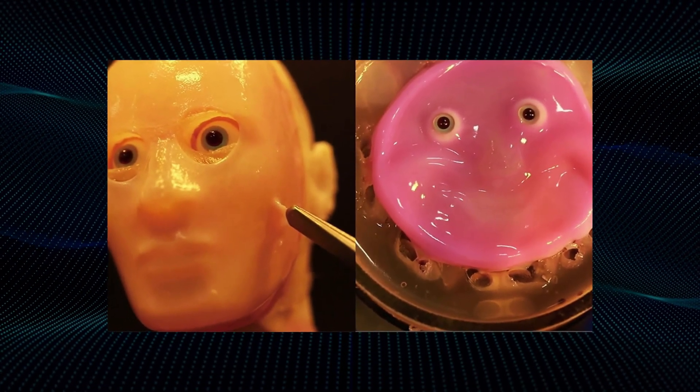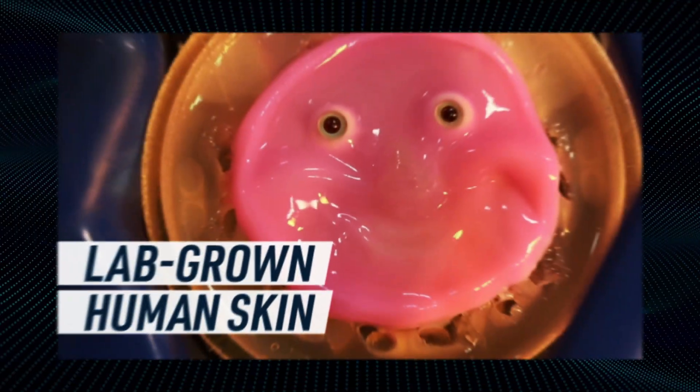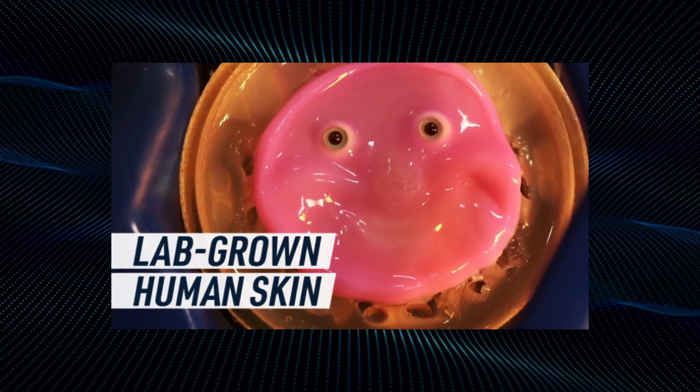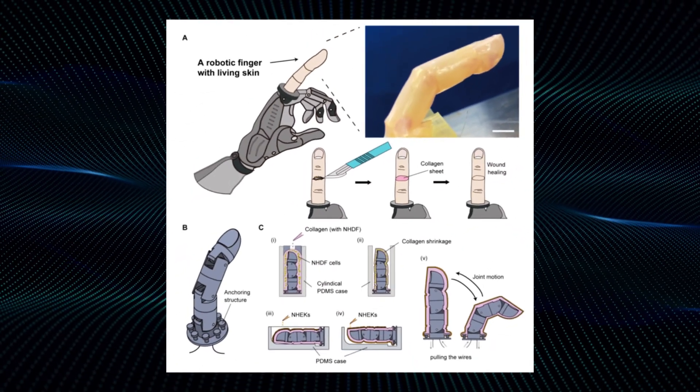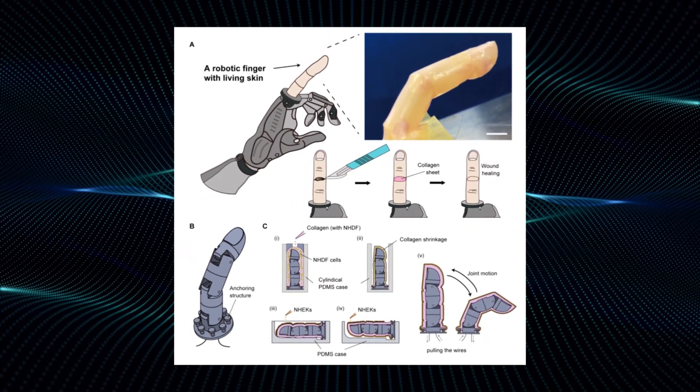By culturing these cells in a lab, the researchers were able to create a sheet of living skin that can be attached to the robot's finger. The real breakthrough came in how they attach the skin.